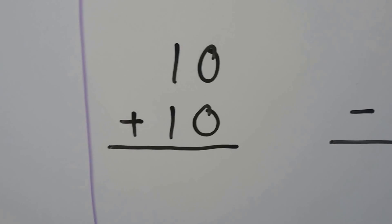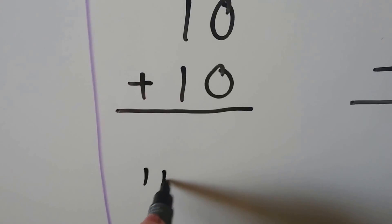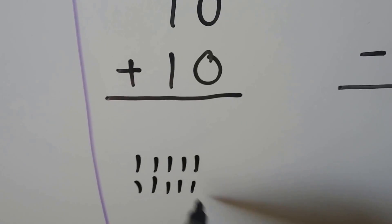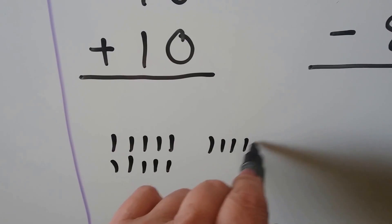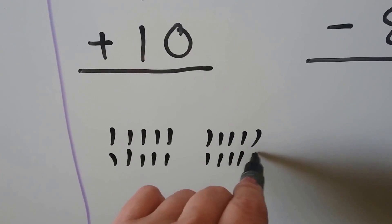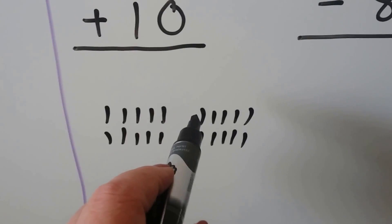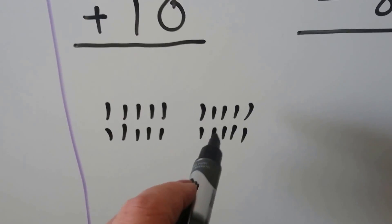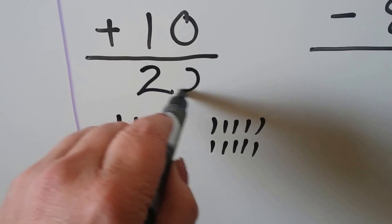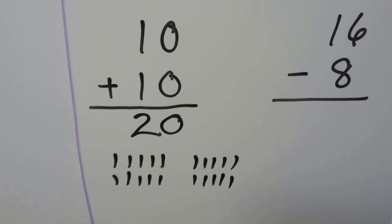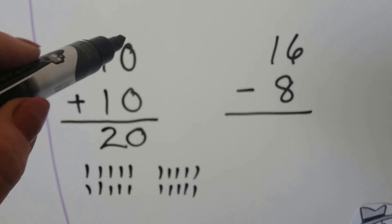10 plus 10. We can use 10 counters: 1, 2, 3, 4, 5, 6, 7, 8, 9, 10, and 10 more counters: 1 through 10. And count them all: 10, 11, 12, 13, 14, 15, 16, 17, 18, 19, 20. 10 plus 10 is equal to 20. And that's a doubles fact — we're adding the same addend, 10 and 10.